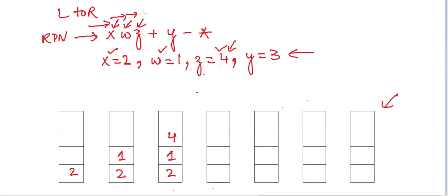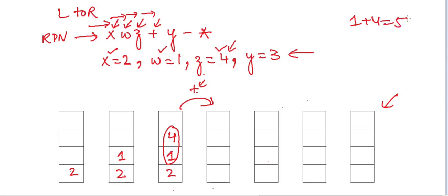When we encounter an operator, we remove the top two values from the stack and apply the operator to them. The expression becomes 1 plus 4 equals 5. We had 2 on the stack; now we push the result 5 on top, so the stack has 2 and 5.